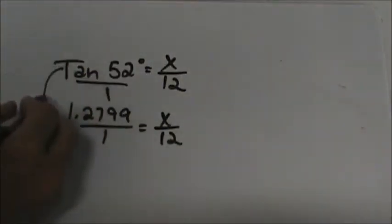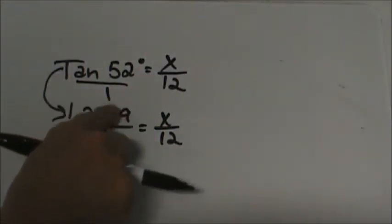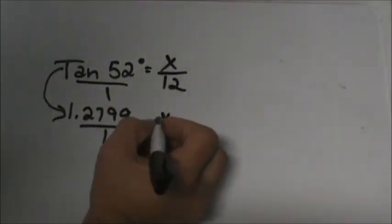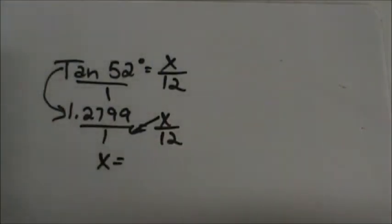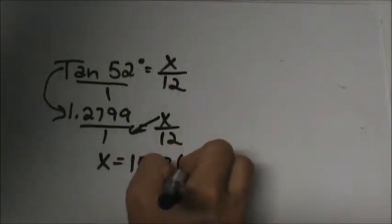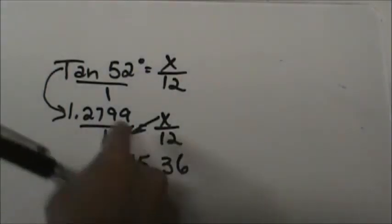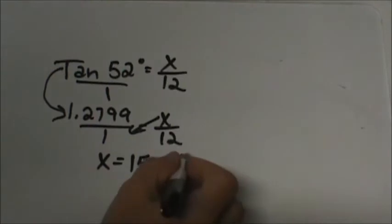All I've done is put the tangent of 52 into the calculator. Now I have the decimal version and I can do a cross product. I'm going to multiply x times 1, which is x, and 12 times 1.2799. Multiplying that out, I get 15.36. I can round to one or two decimal places — if you needed tenths it would be 15.4. So that is the value of x.